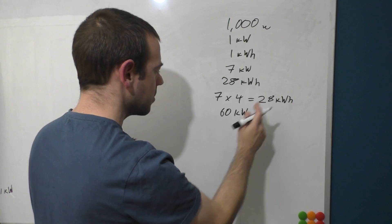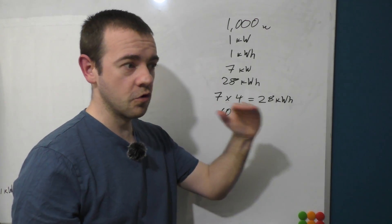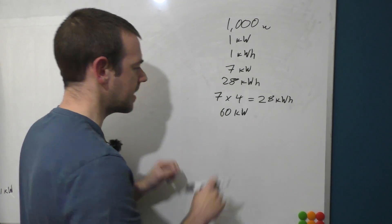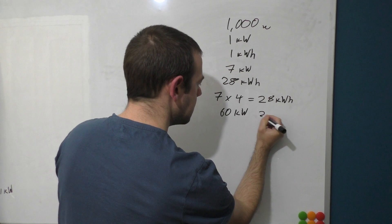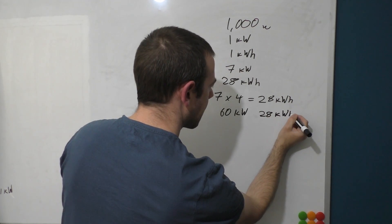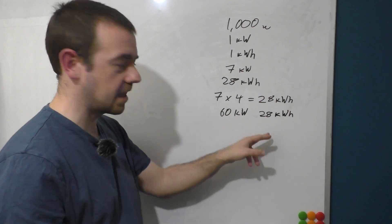So if you plug into a 60 kilowatt charger and it will theoretically run at 60 the entire time, which realistically doesn't happen but let's not get too anal like I say, then it will take 28 minutes to give you 28 kilowatt-hours of energy because you will get one per minute and it's a 28 kilowatt-hour battery.